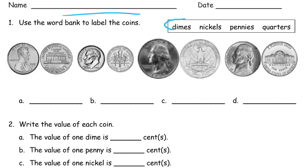Now we have a word bank that's right here and we're using it to write down the names of the coins. They're given examples of them front and back.